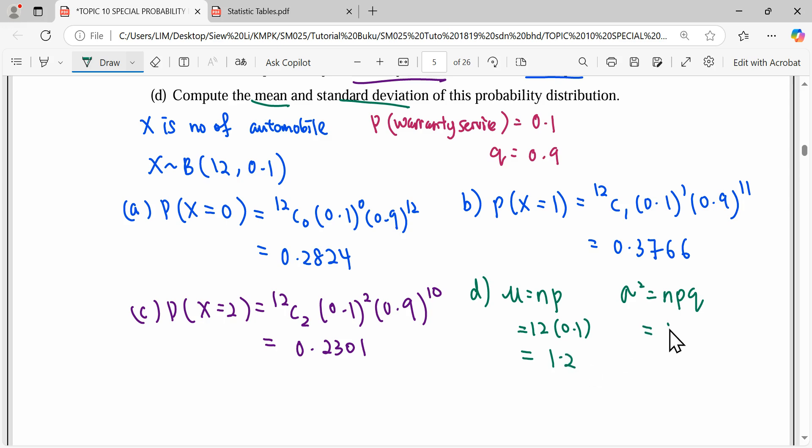And variance here, np is 1.2, q is 0.9, so we get 1.08. Therefore, to get standard deviation, we square root the variance. So here we have our standard deviation.